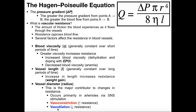In contrast, vasodilation increases blood flow to an area. You vasodilate the arterioles leading to those capillary beds. When you vasodilate, you increase the diameter of that blood vessel, which increases its radius. By increasing R, that will increase blood flow.